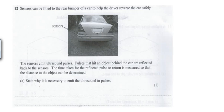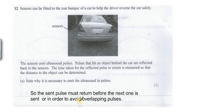Next question, question number 12. Sensors can be fitted to the rear bumper of a car to help the driver reverse the car safely. The sensors emit ultrasound pulses. Pulses that hit an object behind the car are reflected back to the sensor. The time taken for the reflected pulse to return is measured so that the distance to the object can be determined. Part A: State why it is necessary to emit the ultrasound in pulses. It's a typical question - whenever pulse and echo questions come, the standard answer is we make sure that the first pulse returns before sending the next one, or avoiding overlapping between two waves. So the sent pulse must return before the next one. This is the purpose of using pulses, not a continuous wave.